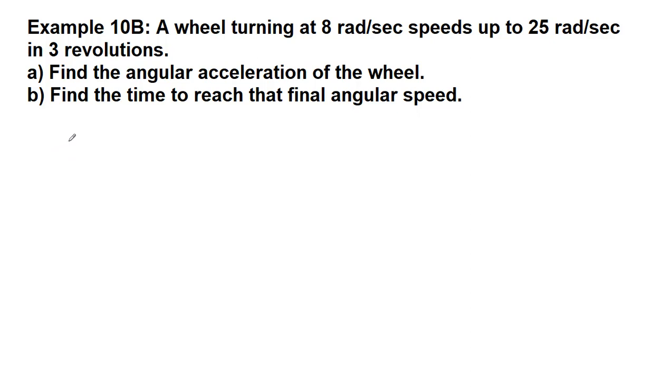All right, and so in this example, we have a wheel. So again, drawing the picture as we read through the problem is going to be the easiest thing. It was initially turning, so it has an initial angular velocity, and it speeds up. So that means that we have an angular acceleration.